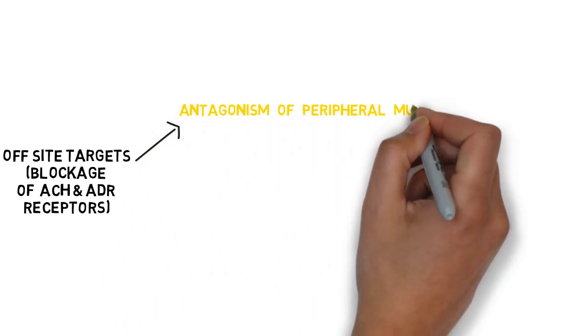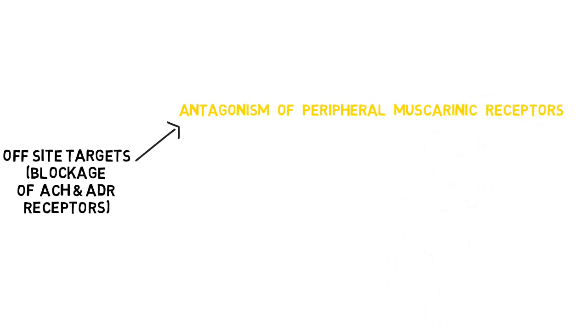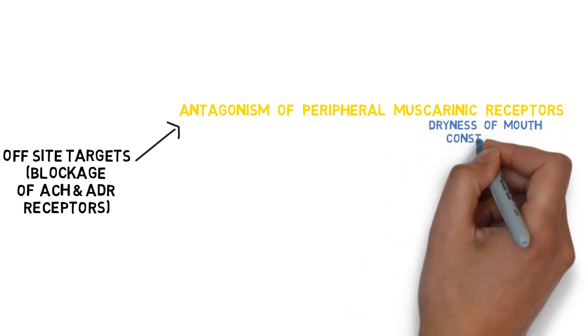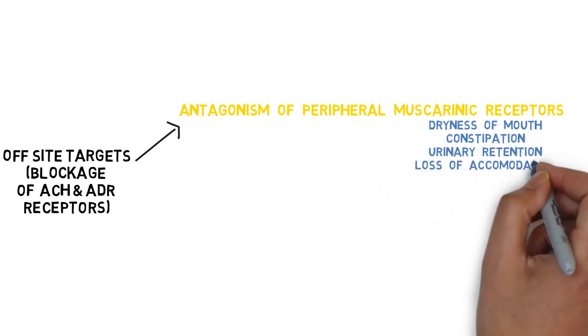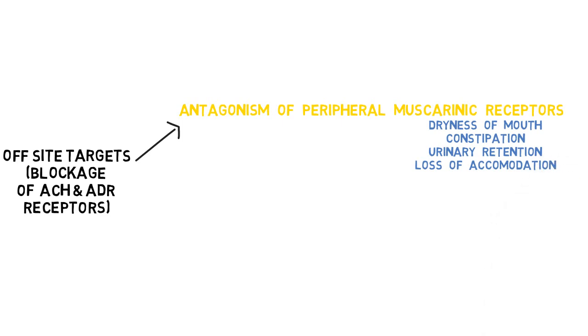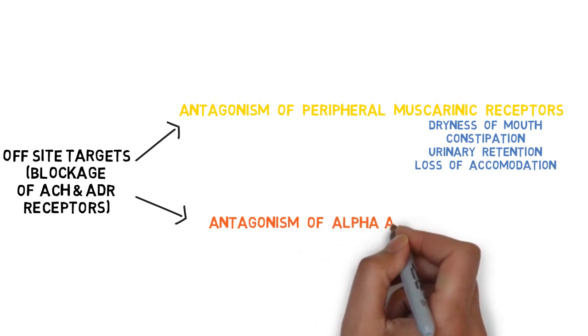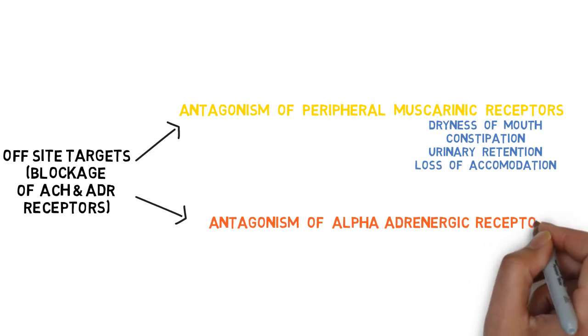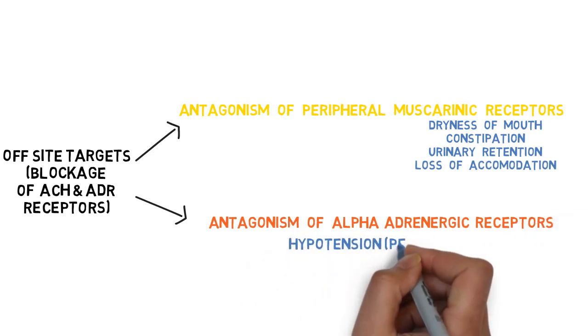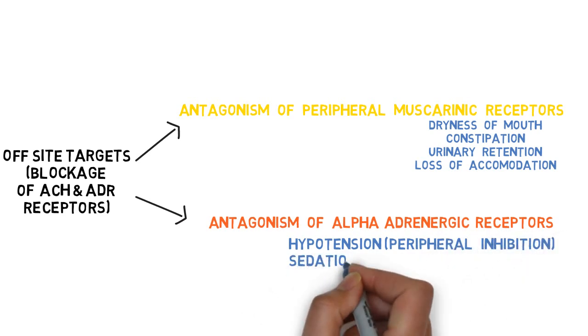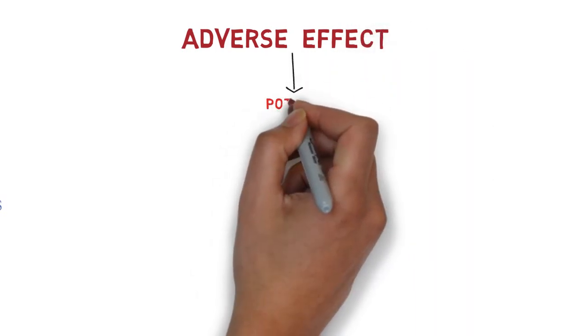The off-site adverse effects are divided based on receptor type. Blockage of peripheral muscarinic receptors produces atropine-like anticholinergic symptoms: dryness of mouth, constipation, urinary retention, and loss of accommodation resulting in blurred vision. Blockage of alpha-adrenergic receptors produces anti-adrenergic symptoms such as hypotension or sedation, depending on whether central or peripheral receptors are affected.